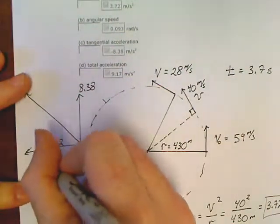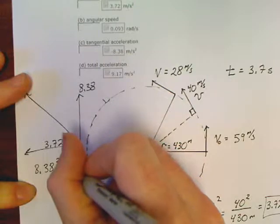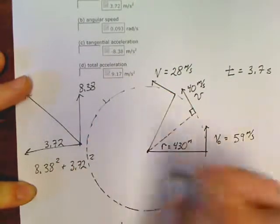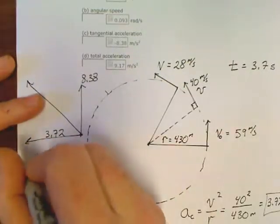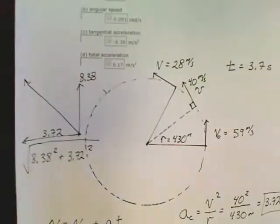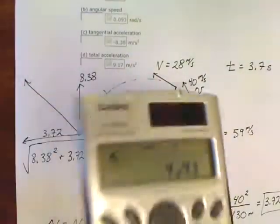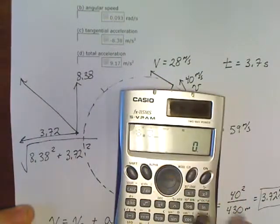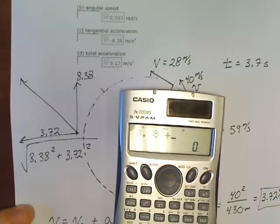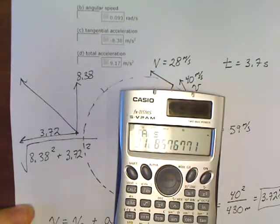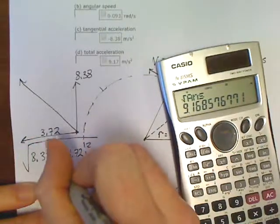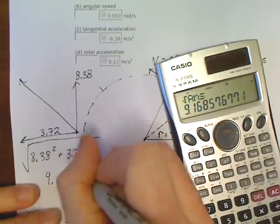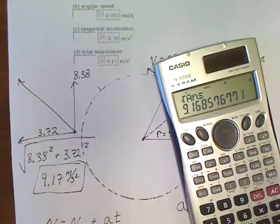All you've got to do is find the Pythagorean on this. 8.38 squared plus 3.72 squared. And if you're going to do Pythagorean, Pythagorean, man, I sound redneck now, don't I? Take the square root of that. 8.38 squared plus 3.72 squared. Square root. 9.17. So, there's the total acceleration.